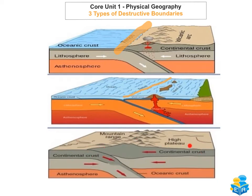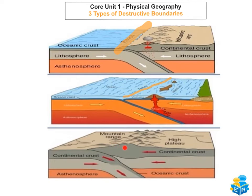The third type is continental crust colliding with continental crust. When this happens, both crusts refuse to subduct — not much subduction takes place because both are very thick. Instead, both crusts buckle upward and form very high fold mountains, like the Himalayas. Because of the great pressure of the plates buckling, earthquakes will also occur as pressure builds up, then releases along a fault line, sending seismic waves and tremors.